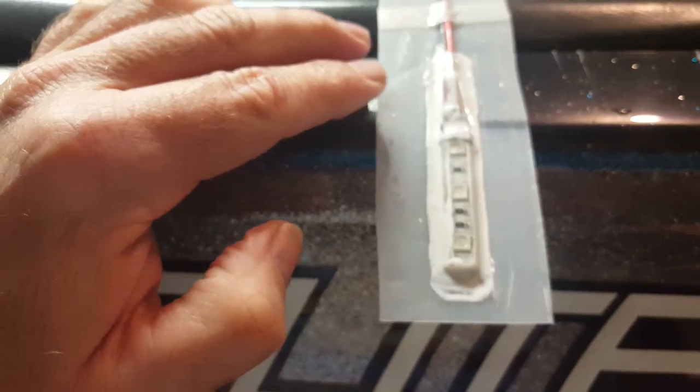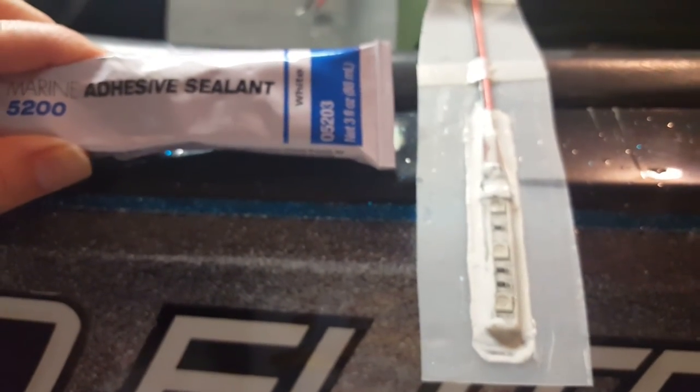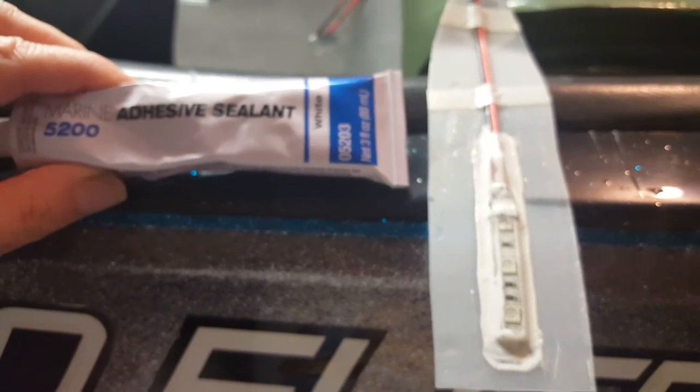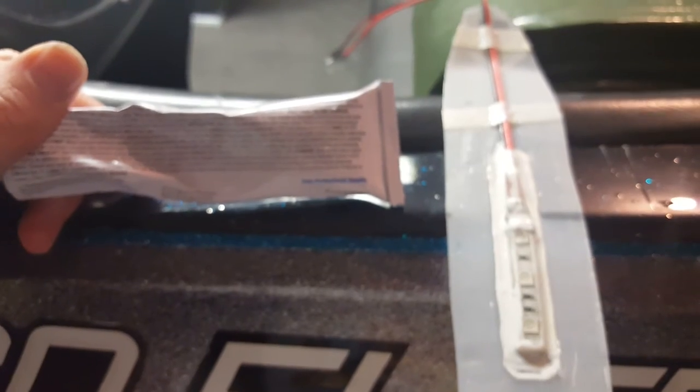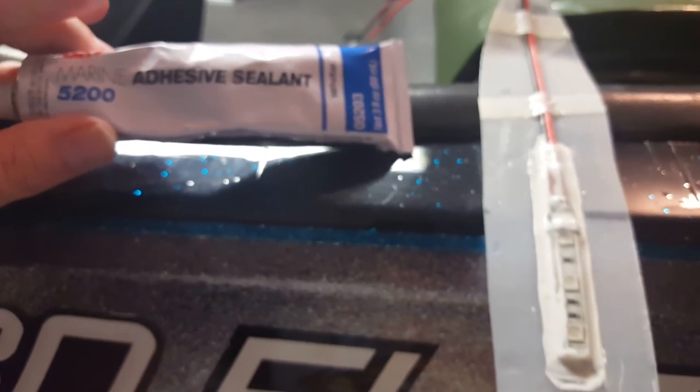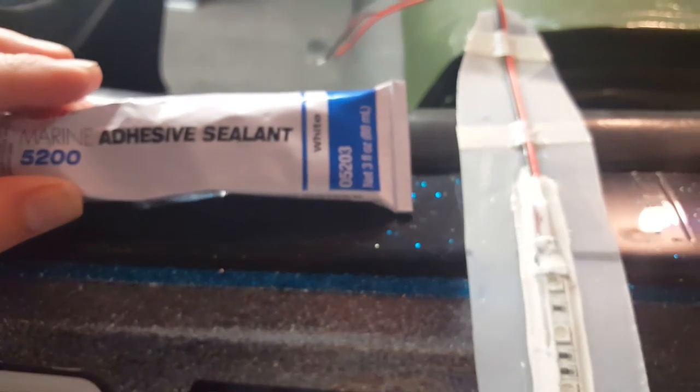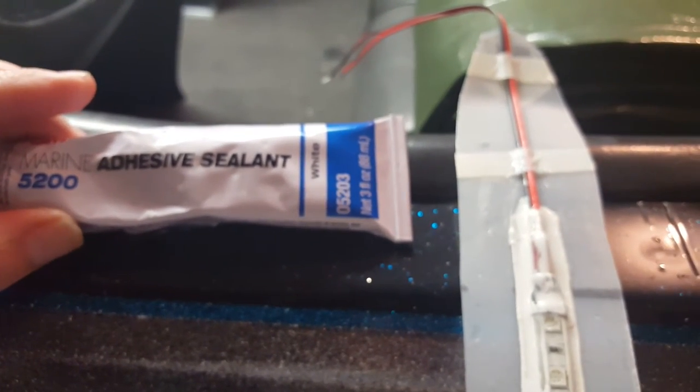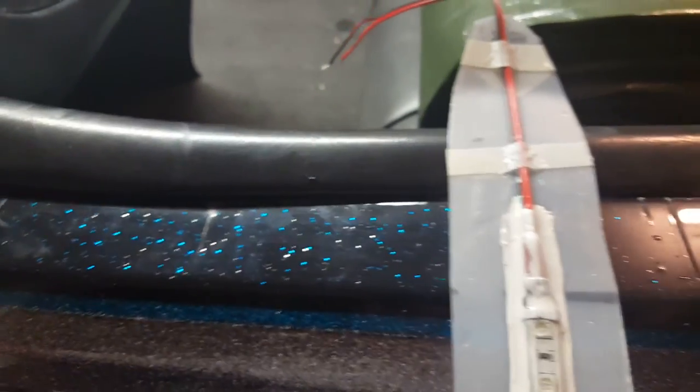Basically what I've done is you want to use acetone to wipe down the area inside your live well where you're going to put the light. The reason you want to do that is the sealant really needs a clean surface to seal up to. If you use rubbing alcohol that could prevent this product from sealing correctly. No matter what product you use, make sure you read the directions so that you don't contaminate it with another product while you think you're doing something to clean it. You don't want to mess up your whole installation.